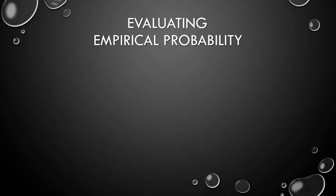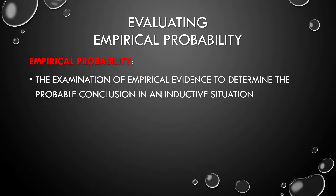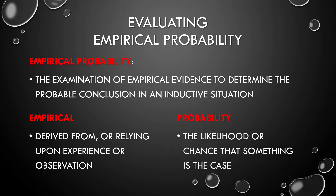Since we're going to be focusing on evaluating empirical probability, it'll be a good idea to start with some definitions. Empirical probability is the examination of empirical evidence to determine the probable conclusion in an inductive situation. Empirical means derived from or relying upon experience or observation. And probability is the likelihood or chance that something is the case — something supported by evidence strong enough to establish presumption, but not necessarily proof.